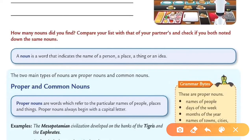This is the definition of noun — it is very common. Now, there are two main types of noun: the first one is proper noun and the second one is common noun.